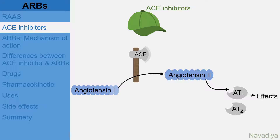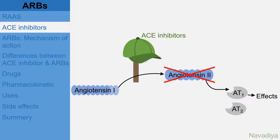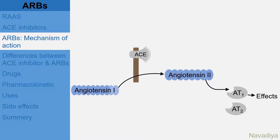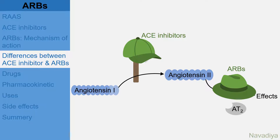Coming to the drugs that inhibit this system: one group is ACE inhibitors. They inhibit ACE and thereby reduce synthesis of angiotensin 2. The second group and topic of this video is angiotensin receptor blockers. They bind with angiotensin receptors and block the effect of angiotensin 2. They are 10,000 times more selective for AT1 receptors. As the overall effect of ACE inhibitors and ARBs is the same — that is, decreasing the effect of angiotensin 2 — both groups share some common features, like common uses and side effects.